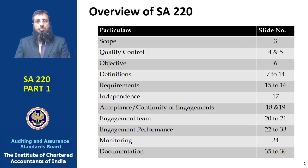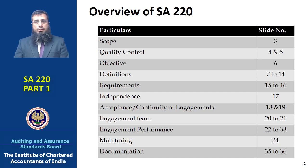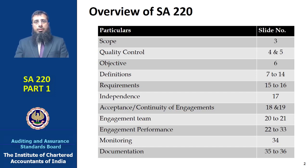On the slides, this is what the standard is going to cover. It covers the scope, quality control, and the objective. There are several definitions given in the standard which we will be dwelling on. There are certain requirements and responsibilities which are cast, and we will be dealing with those. Independence is one of the key things of the standard. There is acceptance and continuity of engagements, the engagement team, engagement performance, and the last few slides are on monitoring and documentation.